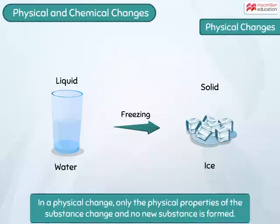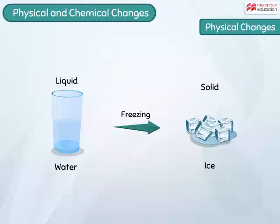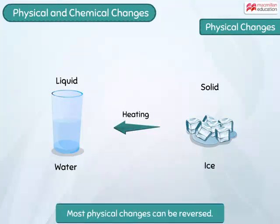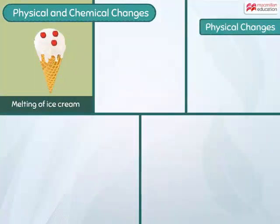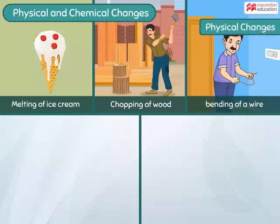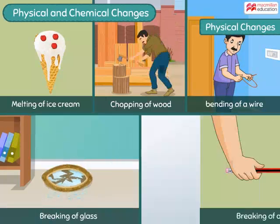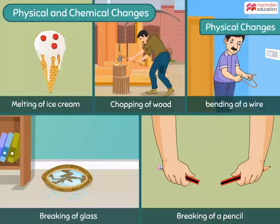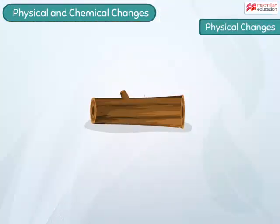Such a change where only the physical properties of the substance change and no new substance is formed is called a physical change. The formation of ice can be easily reversed by heating the ice to form water. Most physical changes can be reversed. Melting of an ice cream, chopping of wood, bending of a wire, breaking of a glass, and breaking of a pencil are physical changes.